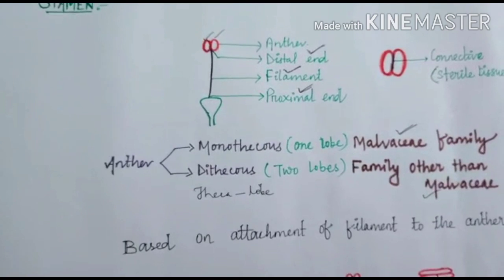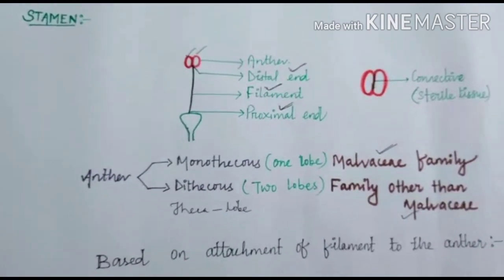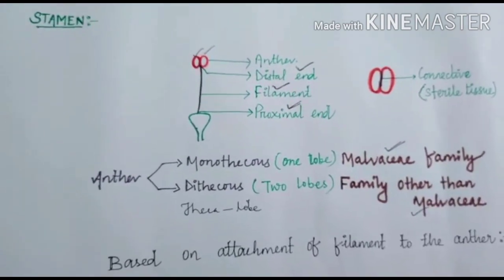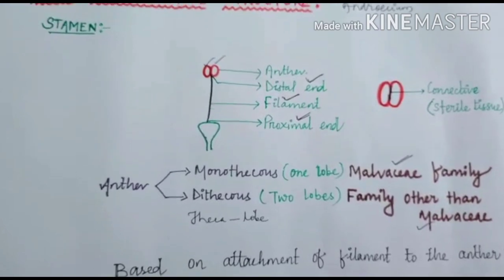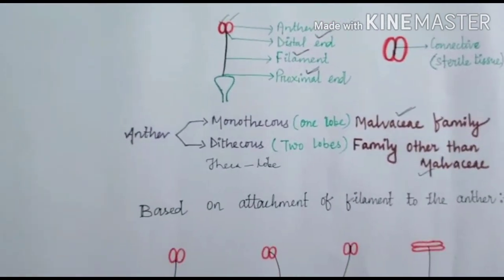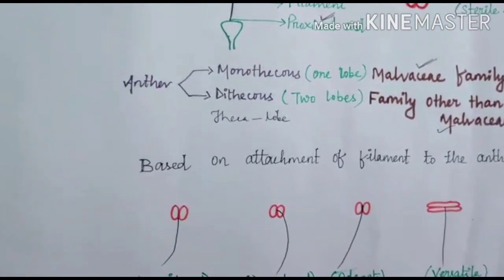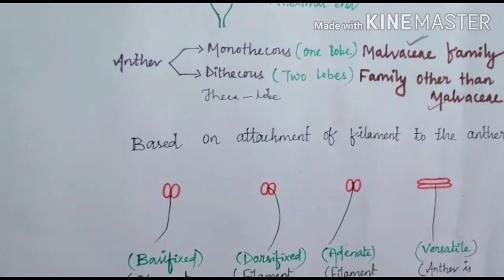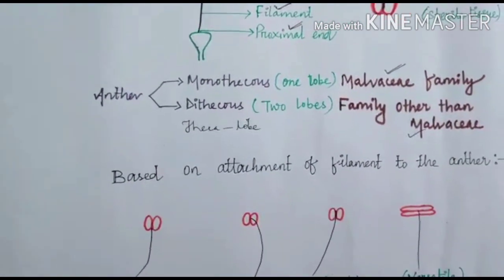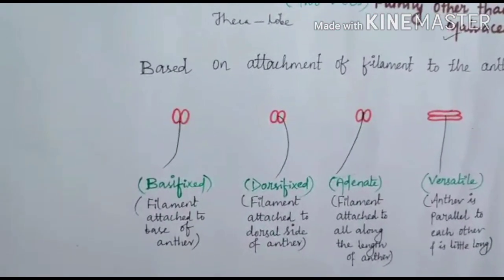Monothecous anther is the characteristic of the Malvaceae family, while dithecous anther is the characteristic of all other families. Based on the attachment of the filament to the anther, there are four types of anther.